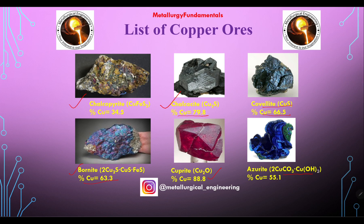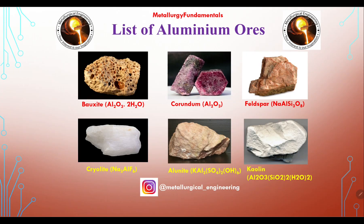Next is aluminium ores. Bauxite is Al₂O₃·2H₂O. The other ores are corundum, feldspar, cryolite, alunite, and kaolin. These are the six most common ores for aluminium.